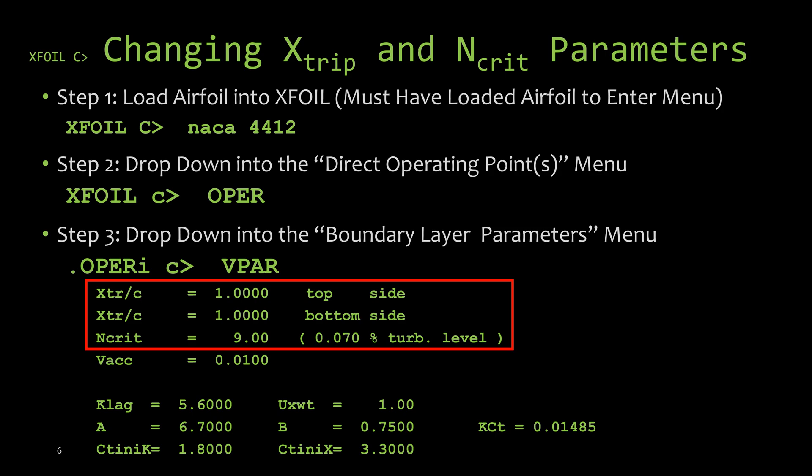When you're in this direct operating points menu, you can go to the boundary layer parameters menu by typing in VPAR, that's VPAR, into the command prompt. And then you'll see it spit out the current values that are set for these boundary layer parameters.